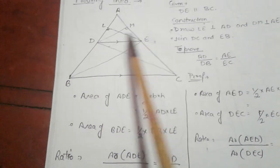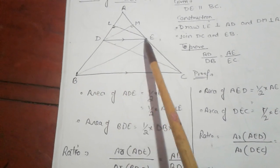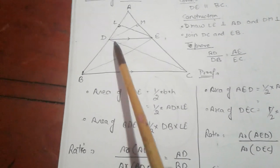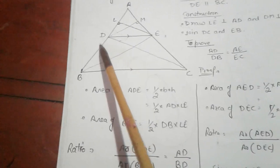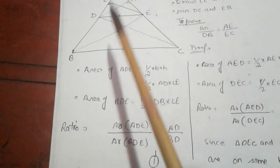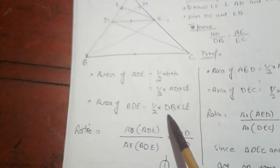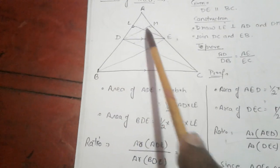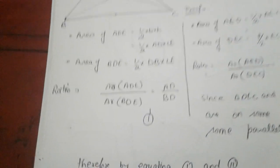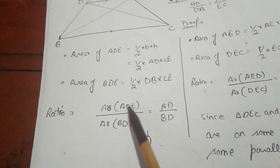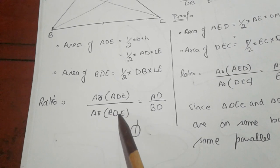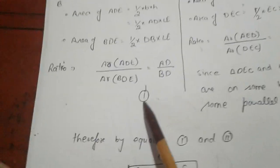Now, area of triangle BDE: this is an obtuse angle triangle, and for an obtuse angle triangle, the altitude lies outside the triangle. So LE is the height, and we take half into base into height, where the base is DB and height is LE. Now finding the ratio of both areas, area of ADE upon area of BDE equals AD upon BD. This is equation one.